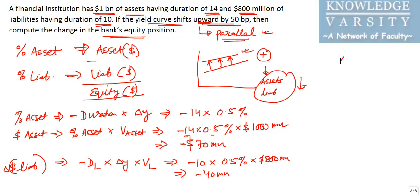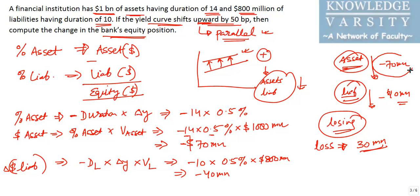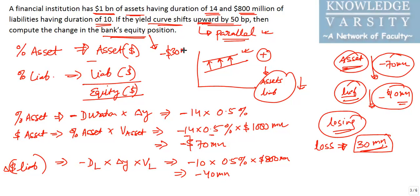Assets have decreased by $70 million and liabilities have decreased by $40 million. The bank is losing because its asset value has fallen more than its liability value. The net loss is $70 million minus $40 million = $30 million. Therefore, the bank's equity would reduce by $30 million — and that is the answer to this problem.